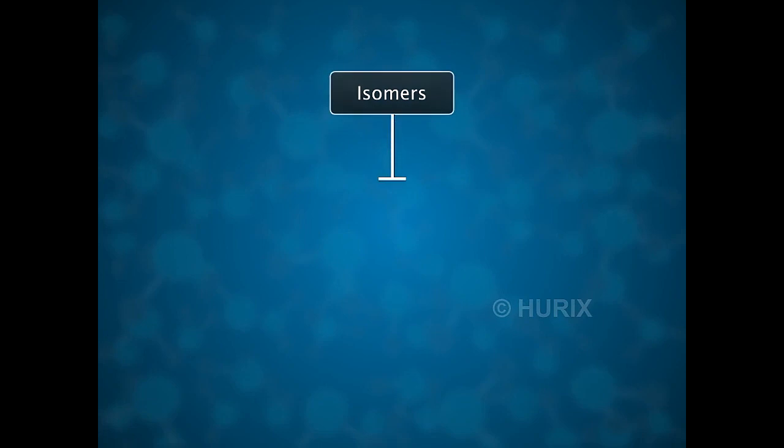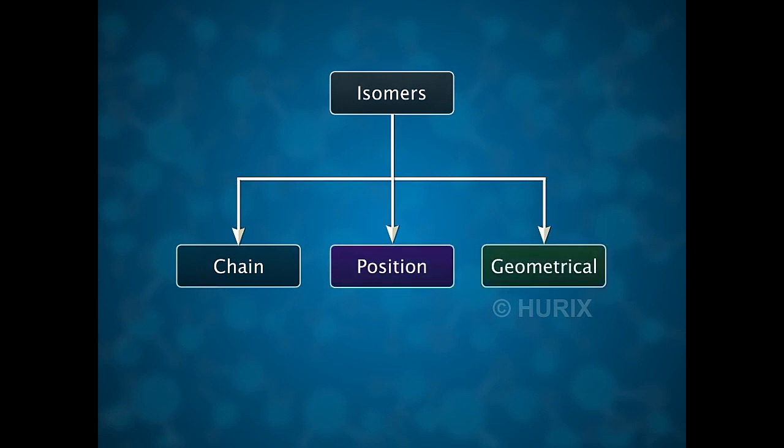We can discuss three types of isomerism at this stage, namely chain, position and geometrical isomerism.